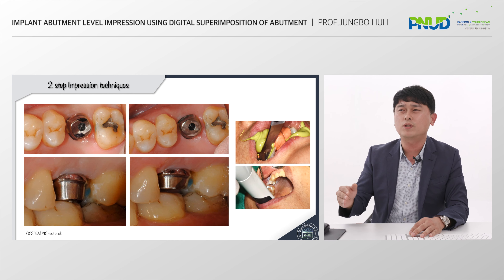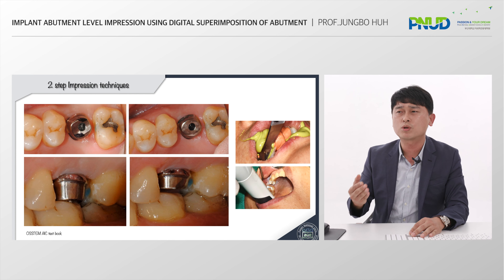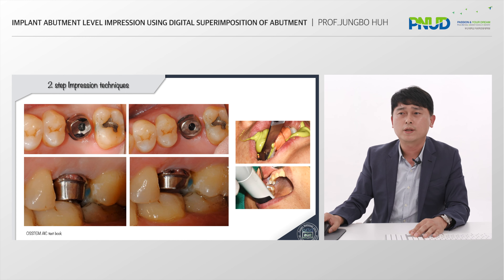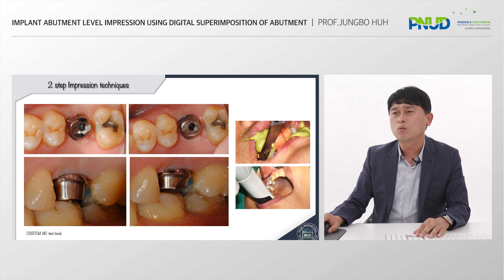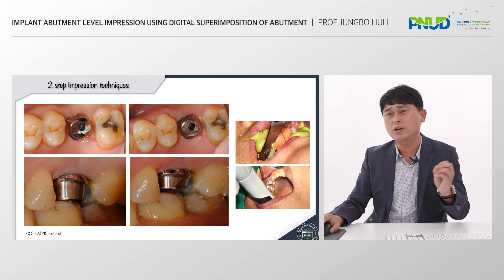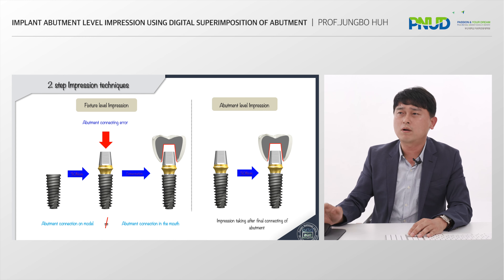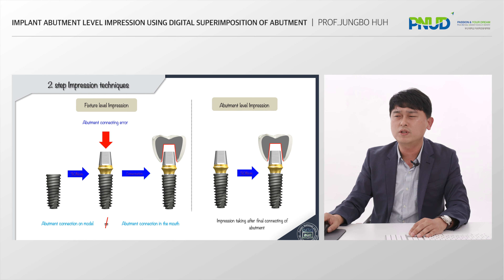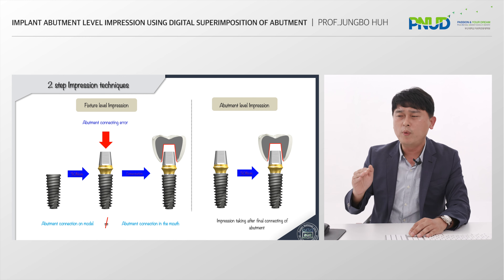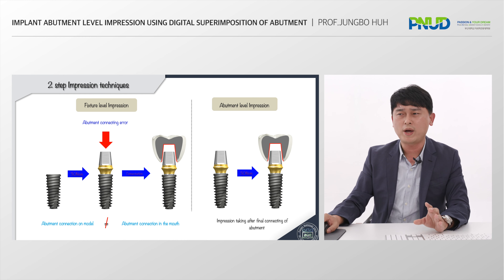In particular, for internal connection type implants, it is recommended to connect and check first if you are making a customized abutment, as there is a possibility that misfit may occur due to insufficient screw tightening. After making the customized abutment, I could find out the error of position. I proceeded with reduction of the abutment to achieve proper shape and proper height, and then retook the impression one more time. That is the abutment-level impression technique after adjusting the abutment. Therefore, in the case of patients sensitive to occlusion requiring precision with an internal connection type implant, a customized abutment is produced through a fixture-level impression and then abutment-level impression is obtained. This is highly recommended.